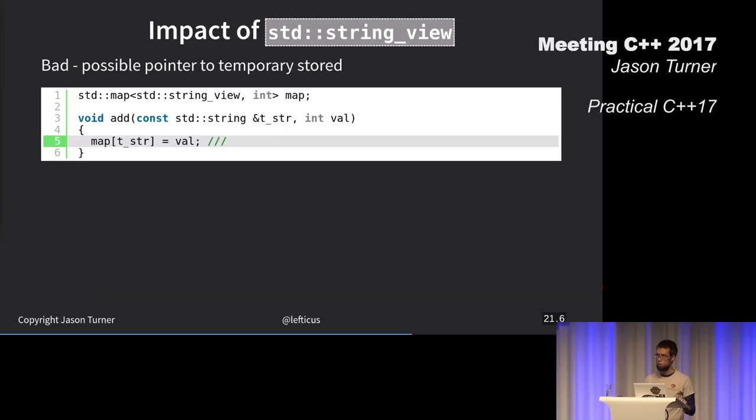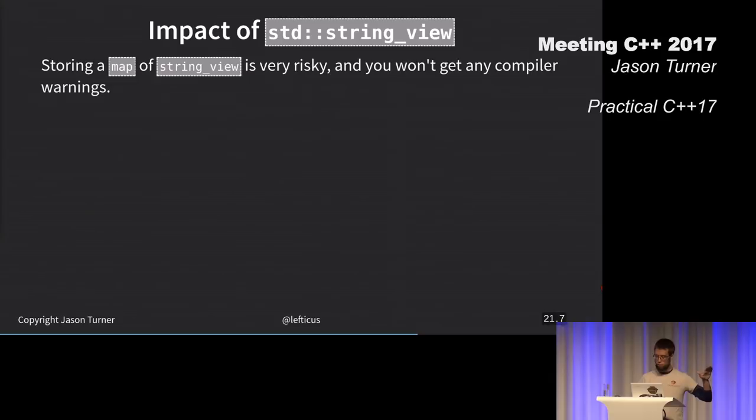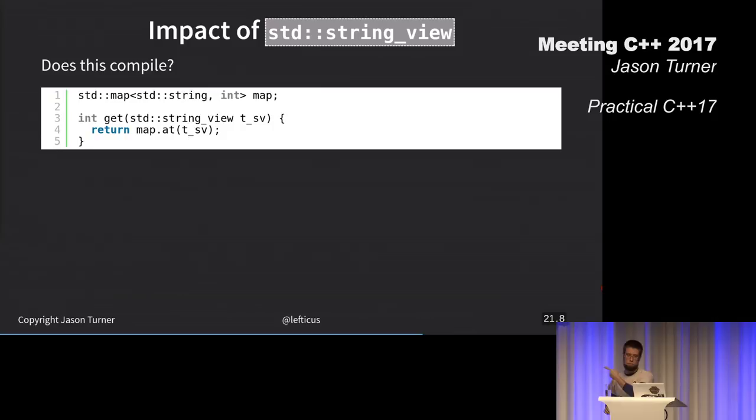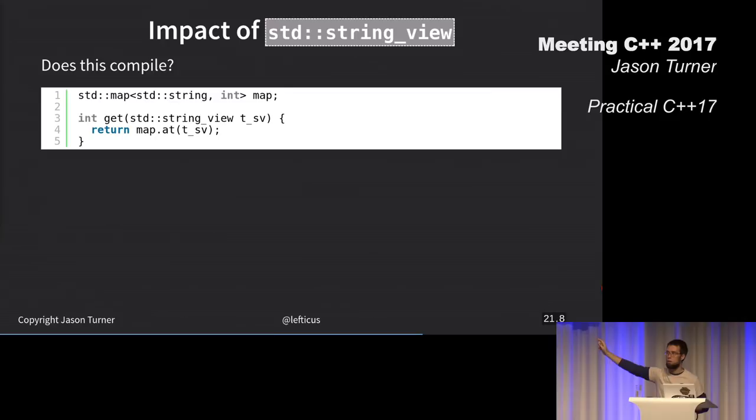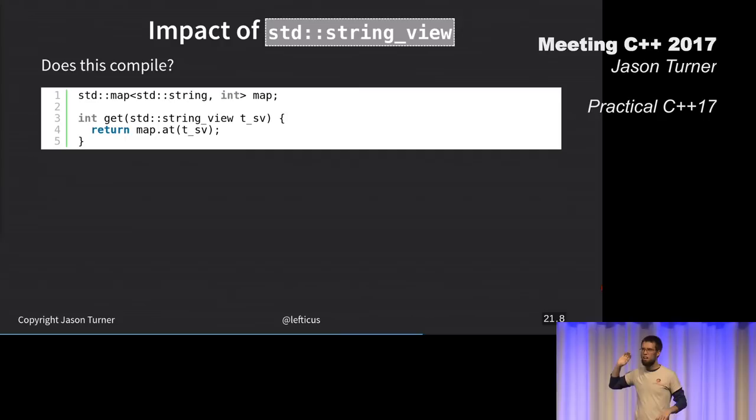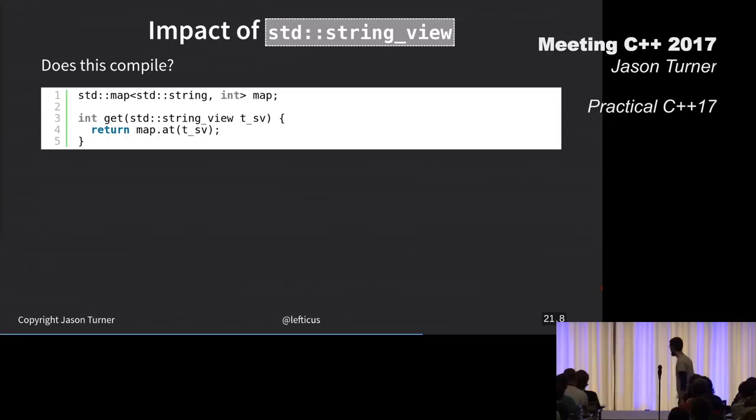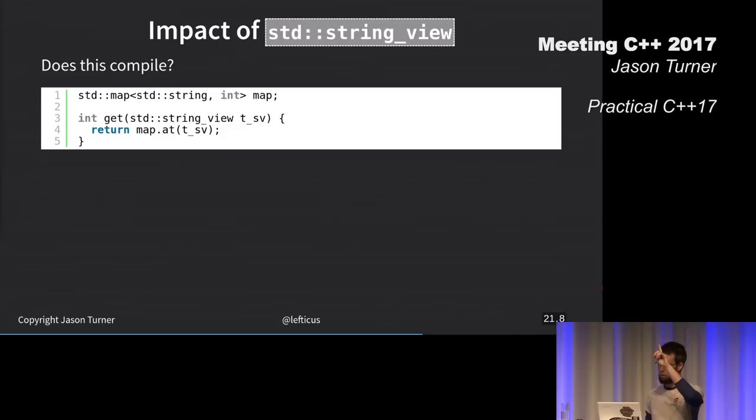This compiles without any warnings, and oops, we have a possible temporary pointer to temporary stored in our map. Map of string view is really risky. Don't do it. That brings up the question of, does this compile? We've flipped it around. We have a map of string, and we're looking up the key by string view. There's no automatic conversion from a string view to a string, so this can't compile.